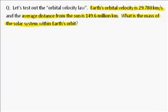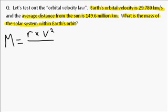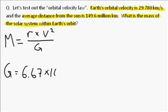Let's write this orbital velocity law. It says that mass is equal to radius times velocity squared, all divided by G. And G, again, is the gravitational constant: 6.67 times 10 to the minus 11 meters cubed per kilogram second squared.